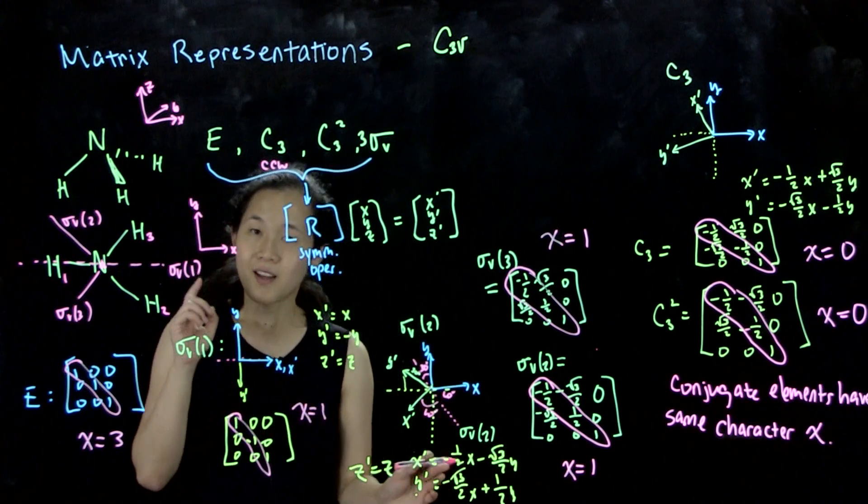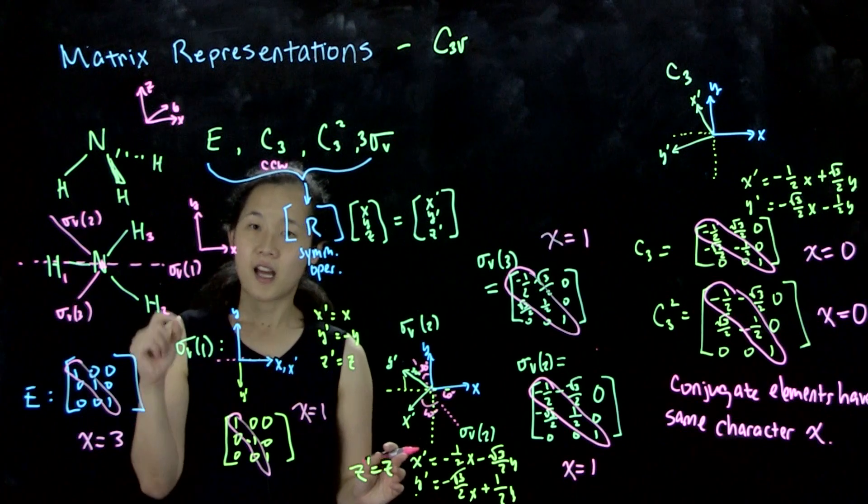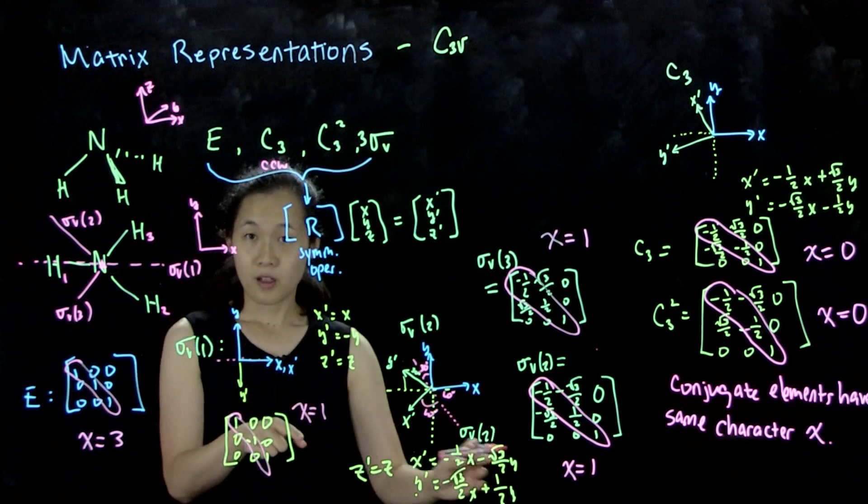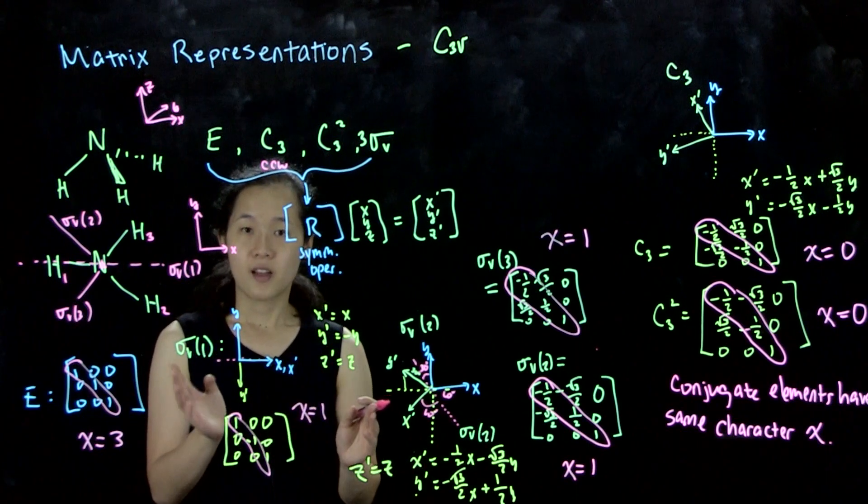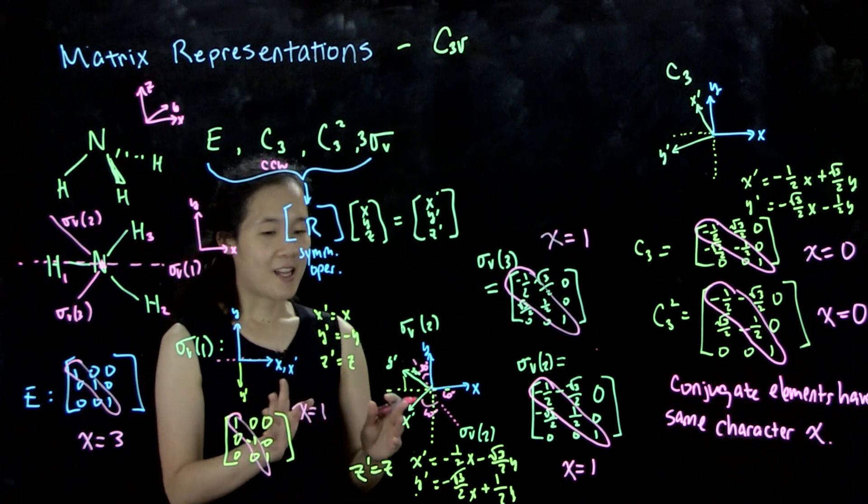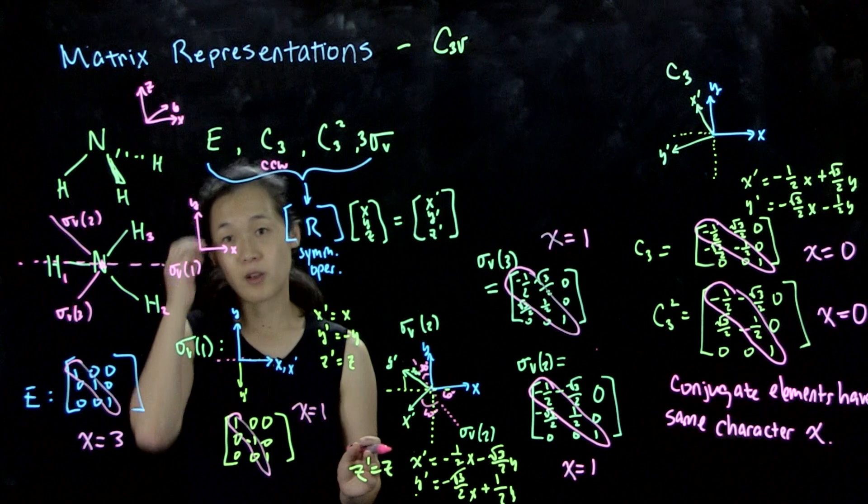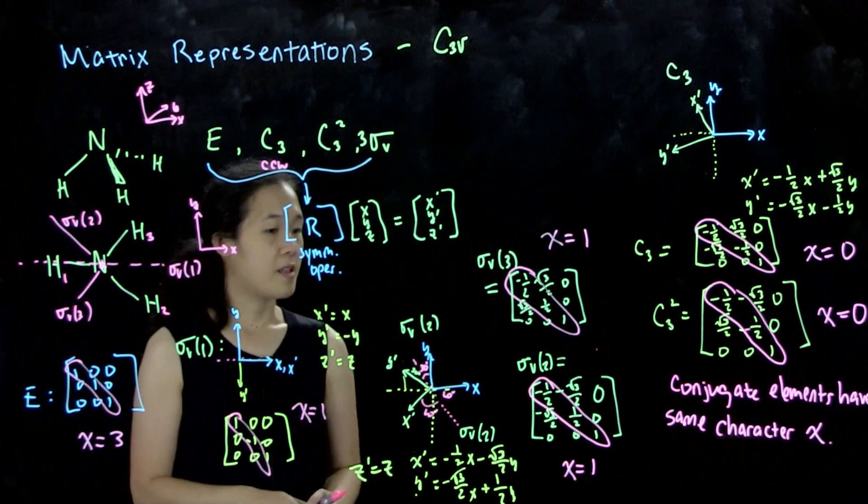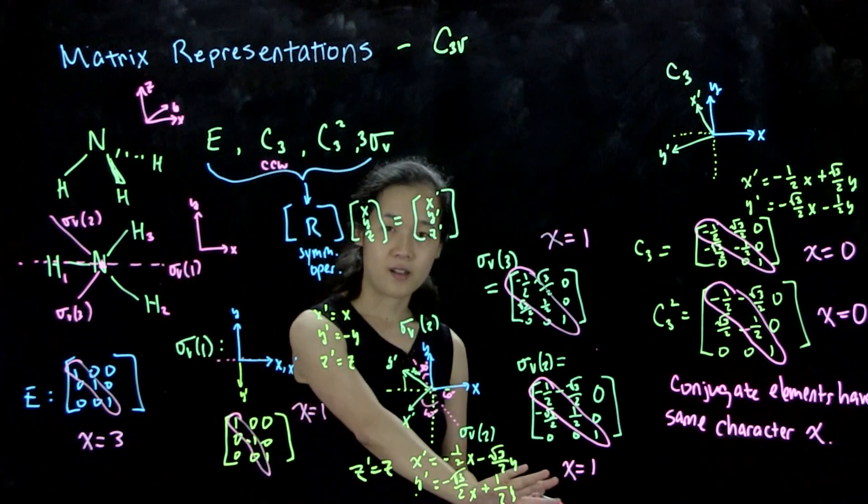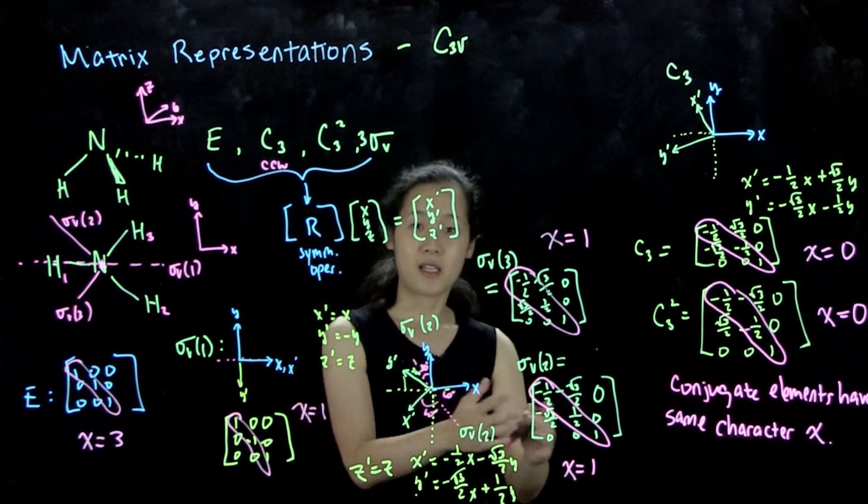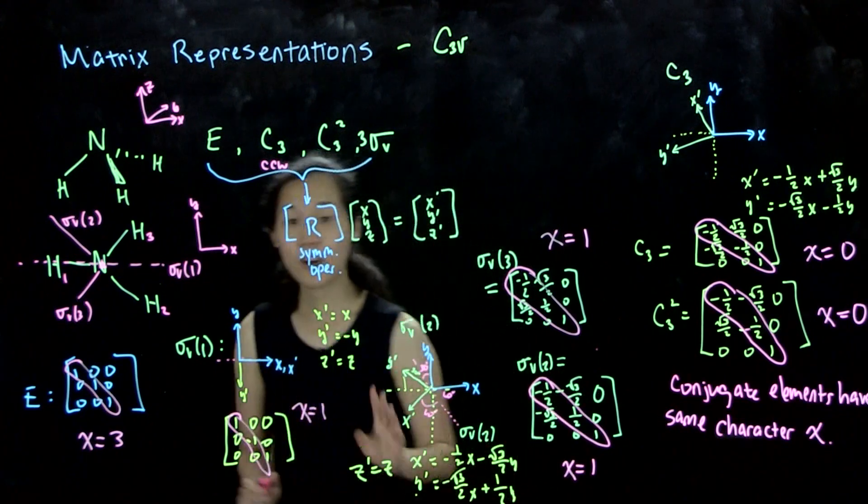I do want to point out, though, that some classes can have the same character but still be in different classes. So it's not saying that if we had another group with class one that they're in the same class. You must do the similarity transform in order to be sure. But still, we can group them and have the character to represent the entire matrix with. So it's very useful.